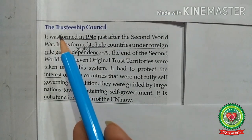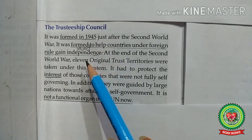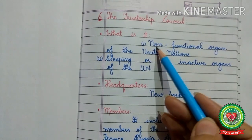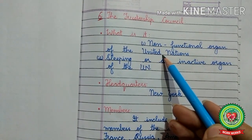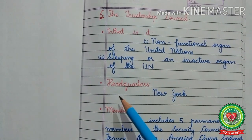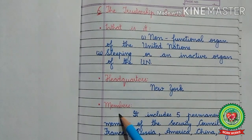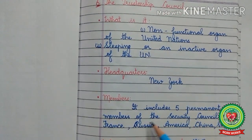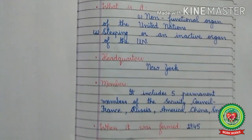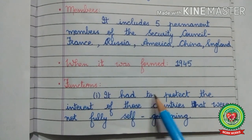The last organ of the United Nations is the Trusteeship Council. What is it? It is a non-functional, or sleeping and inactive, organ of the United Nations. Headquarters: located in New York City, United States of America. Members: it includes the five permanent members of the Security Council — France, Russia, America, China, and England. When it was formed: it was formed in 1945. Its function: to protect the interest of countries that were not fully self-governing.